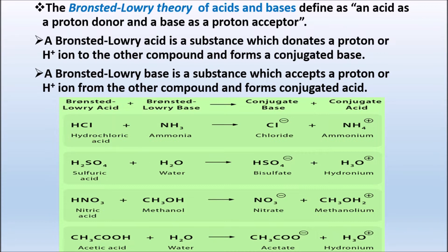So according to Bronsted-Lowry theory: acid is a proton donor (donates H+ ion), and base is a proton acceptor. The base accepts H+ ion and forms conjugated acid; the acid donates proton and forms conjugated base. For example, Bronsted acid HCl and base NH3: HCl donates H+ to form conjugated base Cl- (chloride), and NH3 accepts H+ to form conjugated acid NH4+.